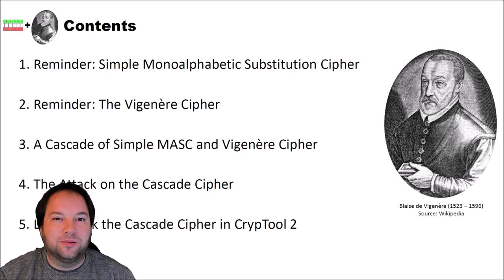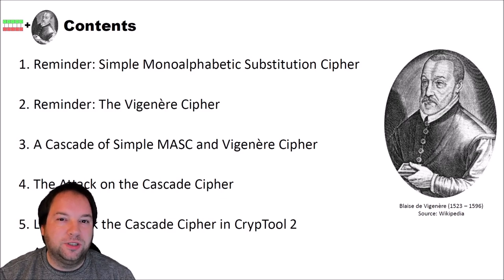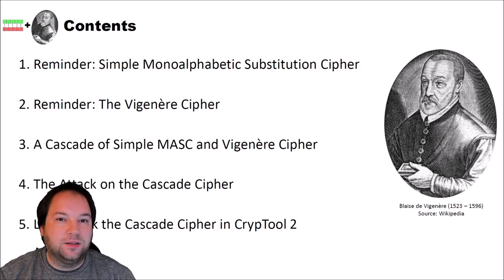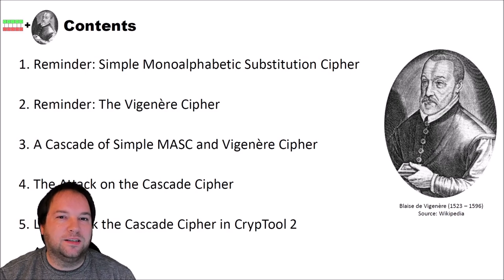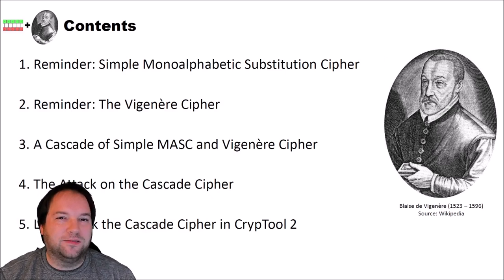Hello and welcome to a new video on cryptography for everybody. In today's video, we will see how to break a cascade of a monoalphabetic substitution cipher and a Vigenère cipher. A viewer of this channel and a user of CrypTool2 asked whether it is possible to break such cascaded ciphers in CrypTool2. I thought at first it is not possible, since we don't have any analyzer for breaking such ciphers, but then I had an idea and built a nice workspace that actually allows breaking these kinds of ciphers.